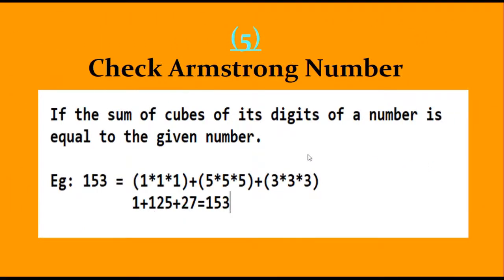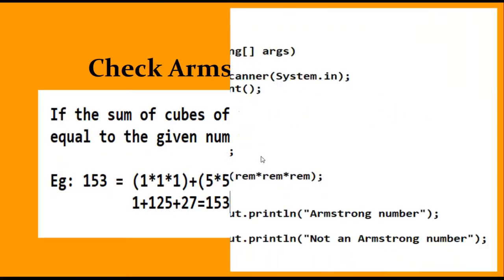The next program is the Armstrong number. If the sum of the cubes of each digit of a number equals the original number, then it is an Armstrong number. For example, 153: 1³ + 5³ + 3³ = 1 + 125 + 27 = 153, which equals the original number, so 153 is an Armstrong number.